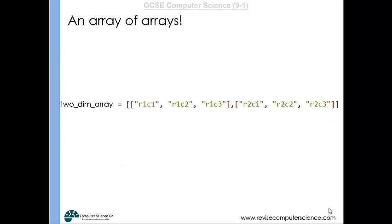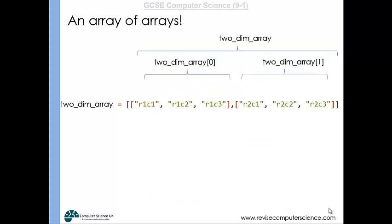If we created our 2D array like so, this would be our 2D array. This would be 2D_array[0] and 2D_array[1]—just identifying the different arrays within the 2D array. This item here would be 2D_array[0][0]. This one would be 2D_array[0][1], that would be [0][2], that would be [1][0], [1][1], [1][2].